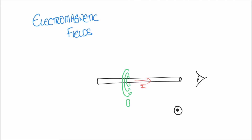If our perspective was at the other end of the wire, looking at the current traveling away from us, we would represent that on the page as a circle with a cross. So we've introduced two symbols: a conductor with current coming towards us shown as a dot, and a conductor with current traveling away from us shown as a cross.